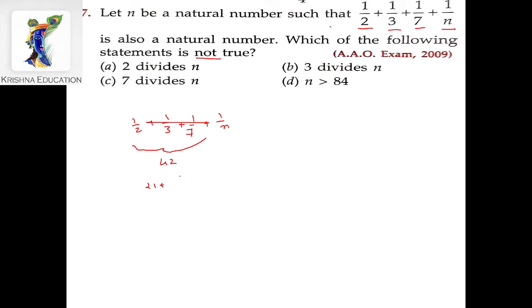Here we have (21 + 14 + 6)/42 = 1/n. This gives us 41/42 + 1/n, which must be a natural number. This is what we have given here.